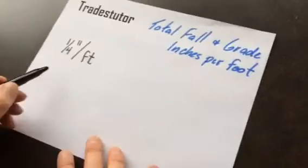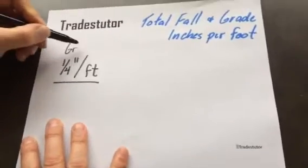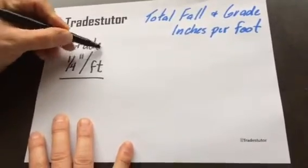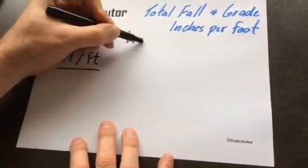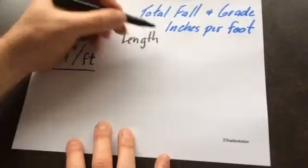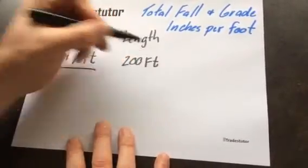So this is your grade, and you have a certain length of pipe. Let's say the length is going to be 200 feet.